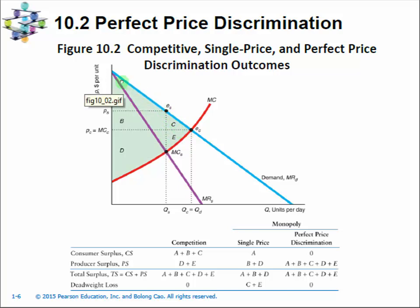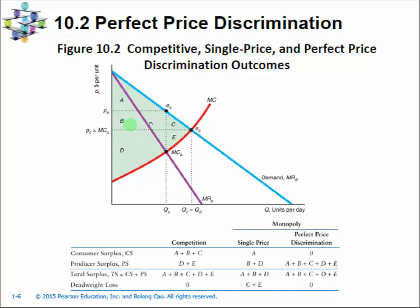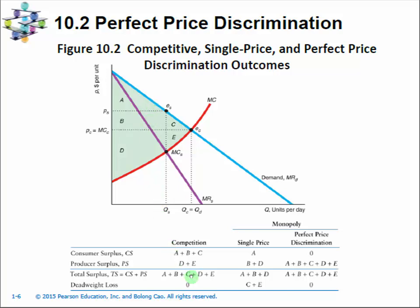But if the monopolist can perform perfect price discrimination, every consumer has their reservation price and total surplus is A+B+C+D+E — the same as the competitive equilibrium. Compared to perfect competition, consumer surplus A+B+C is entirely transferred to the firm with market power. Consumer surplus is highest in perfect competition, lower under uniform pricing, and zero under perfect price discrimination.